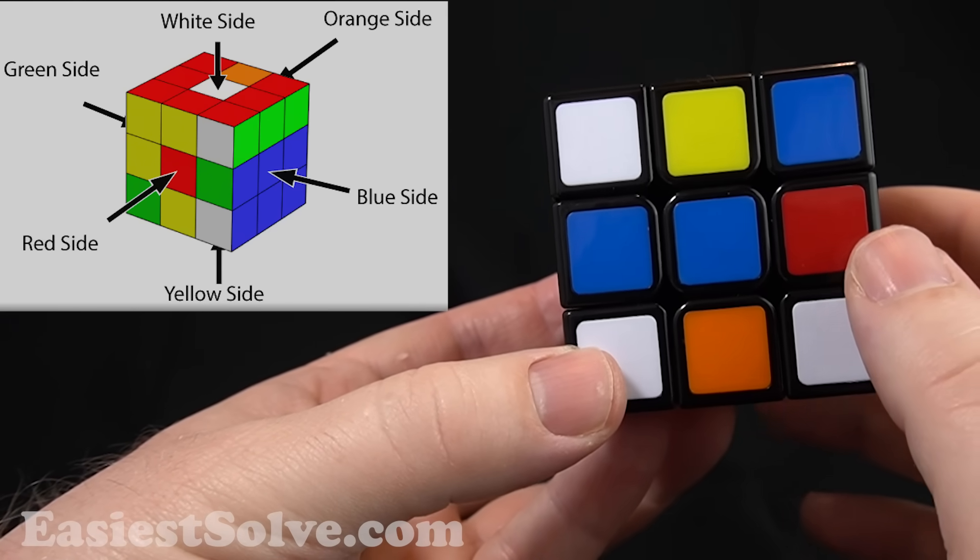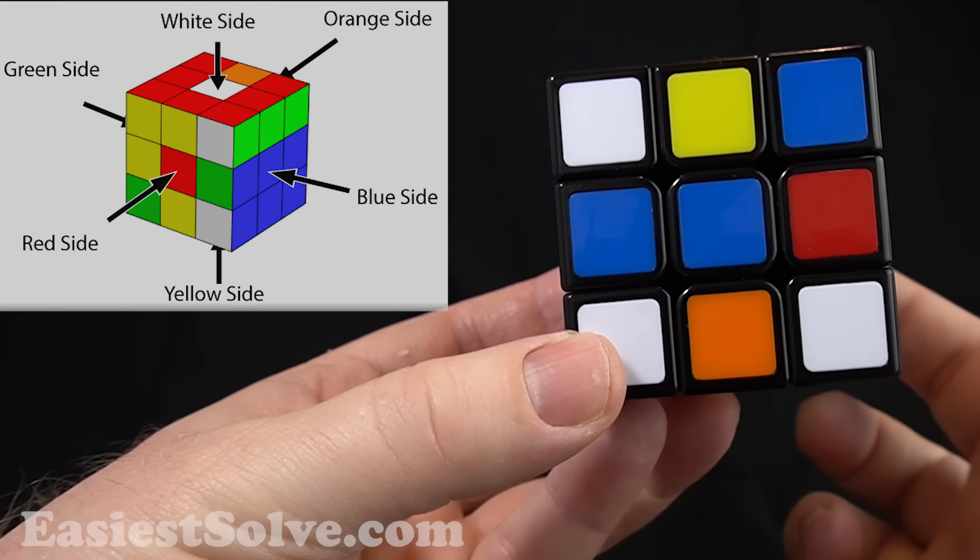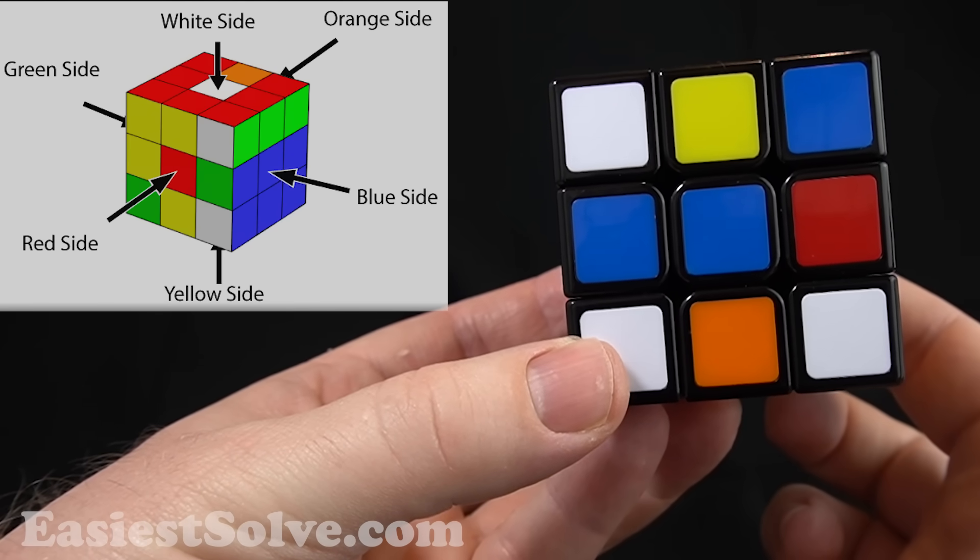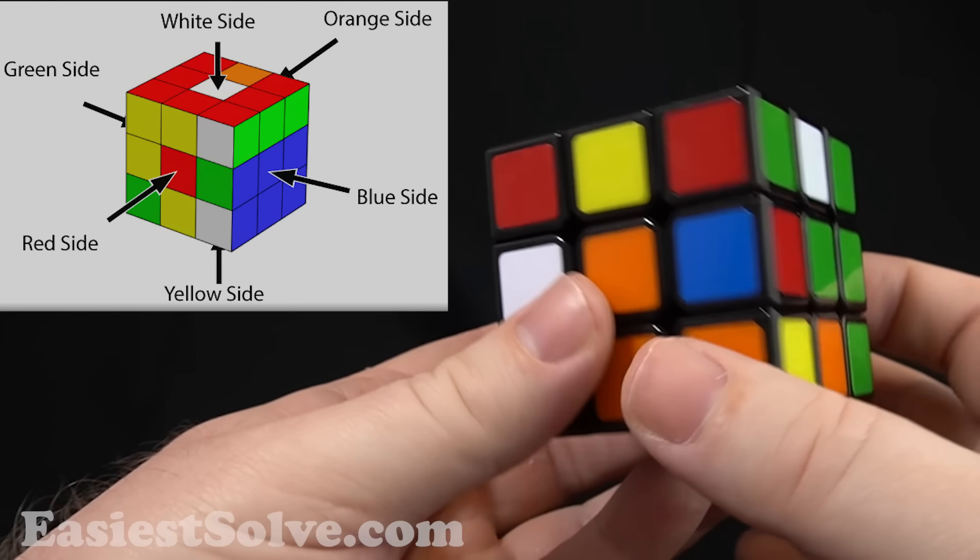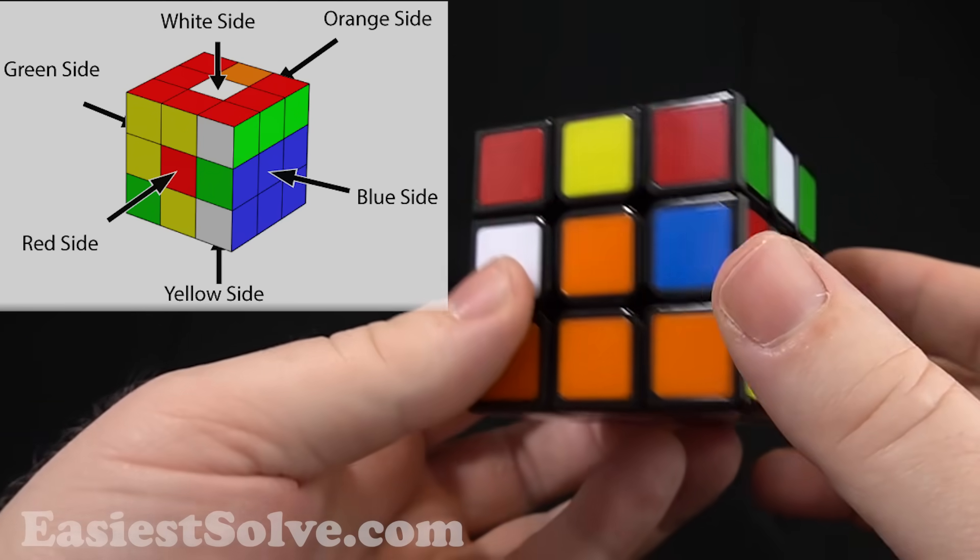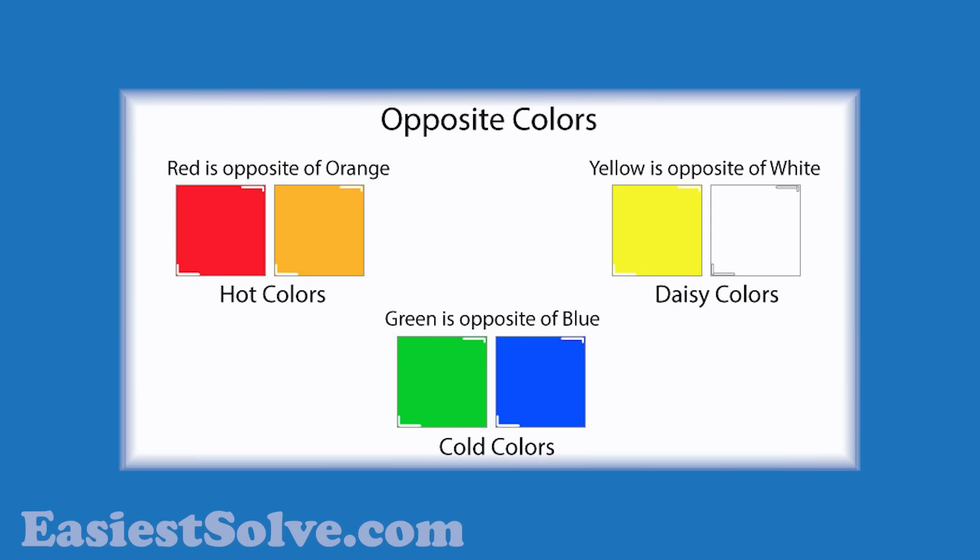Also, I know that the other side of the cube back here is green, because green is opposite of blue. Look, there's the green side. So look at the chart here. We've got blue and green are cold colors. Those are opposites. Red and orange are hot colors, and white and yellow are daisy colors.